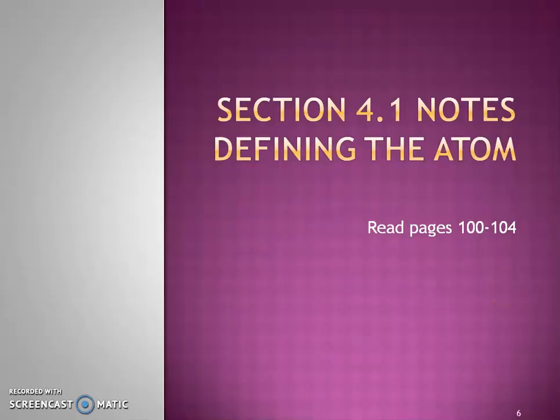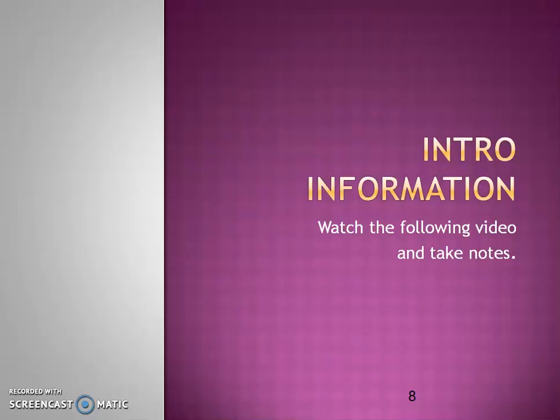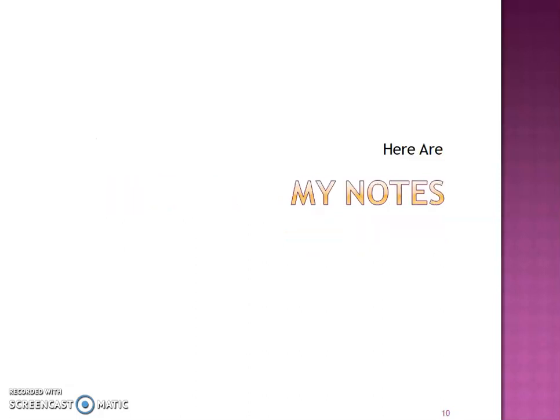Section 1 is about defining the atom. In this section, you're going to describe Democritus' idea about the atom, explain Dalton's atomic theory, and identify the instrument used to observe individual atoms. You should have watched that intro information on the history of the atoms — so this was a nice preview.